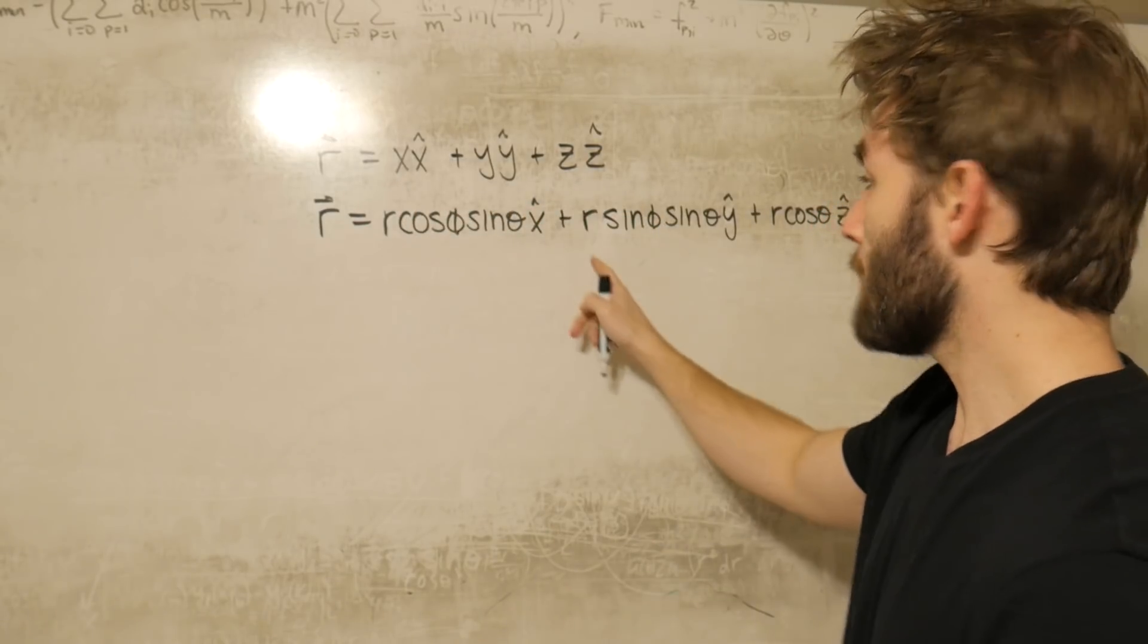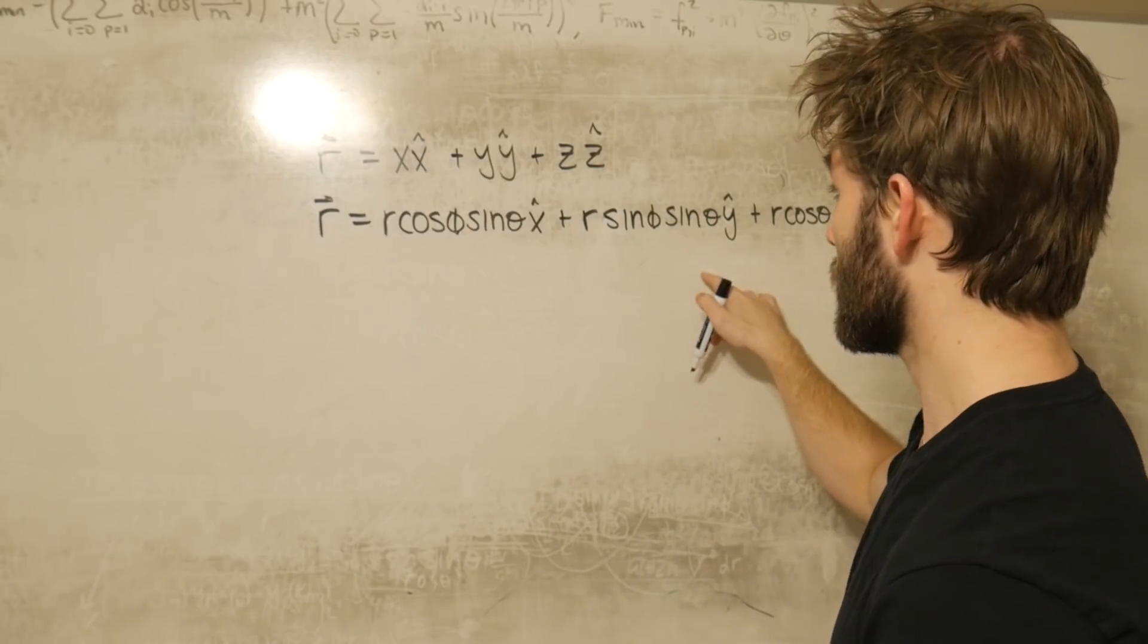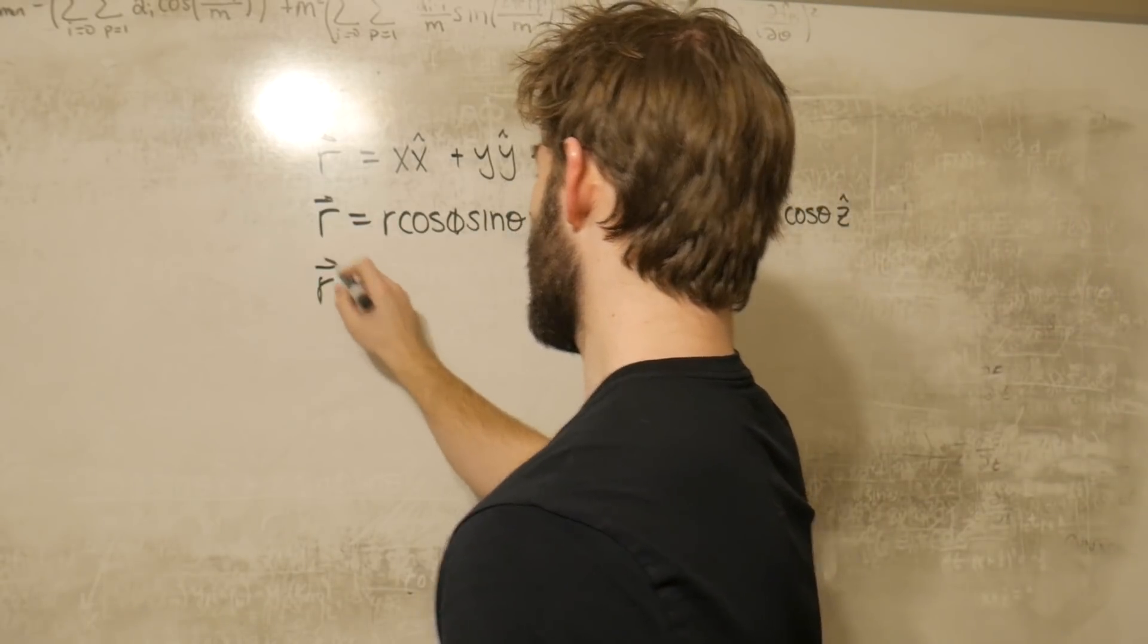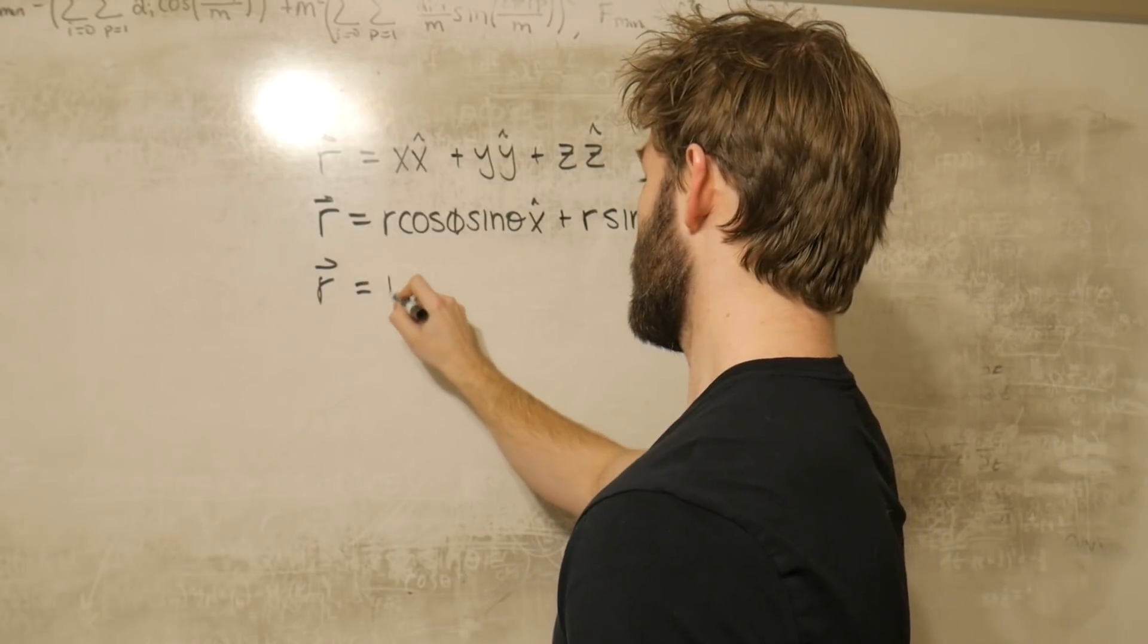And what we have here is a common factor of r in all of these terms. So we're going to factor this out. And what we get is that we can write this r vector equal to r.